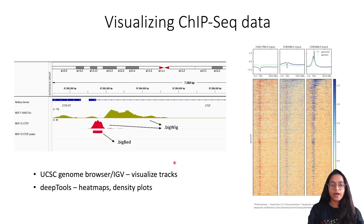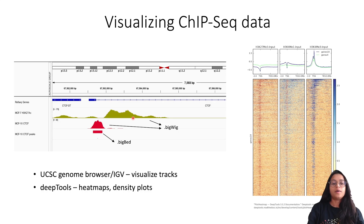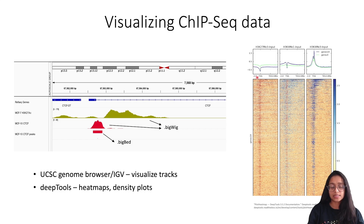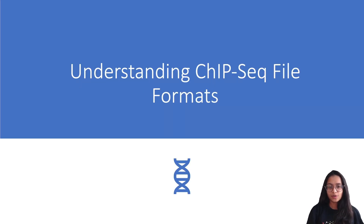Since binary data cannot be opened in a text editor or on the command line, tools like IGV and the UCSC Genome Browser allow you to load bigWig and bigBed files to visualize peak signals and peak regions in the genome. You can also use bigWig files to obtain a global evaluation of enrichment around the transcription start site, as many cis-regulatory elements are close to the transcription start sites of their targets. Packages like deepTools allow you to create heat maps and density plots to evaluate read density across all transcription start sites.